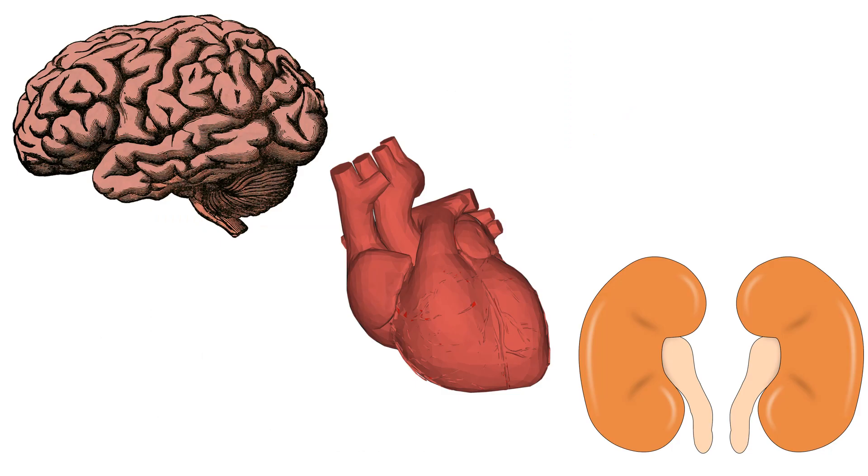Target organs for hypertension are usually the heart, brain, and kidneys. An old saying was that the pump may fail, pipes may break, and the filter may leak.